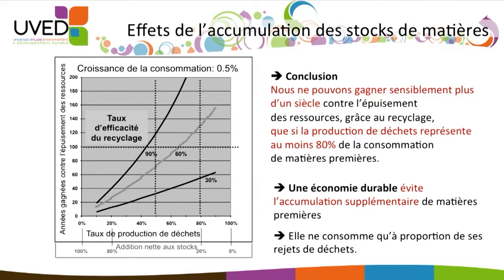This can be shown in a diagram including three graphs connected to three assumptions regarding the efficacy of recycling: 30%, 60%, and 90%. If we discard a certain amount of raw material, 30, 60, or 90 tons are reintroduced in the loop. We set the growth rate at a very low 0.5% per year to fit within the criteria of a sustainable economy, and we vary the waste production rate, which equals one minus addition to stocks.